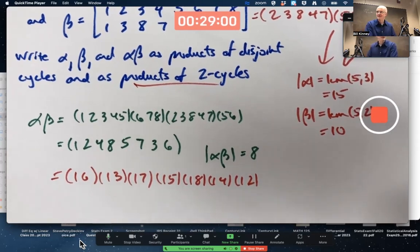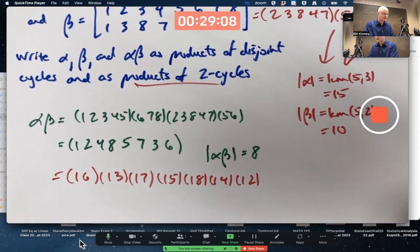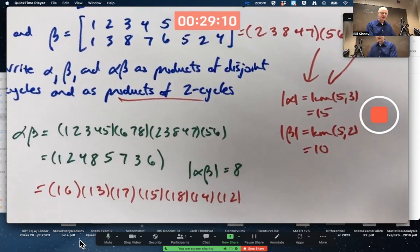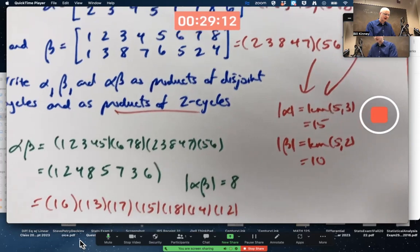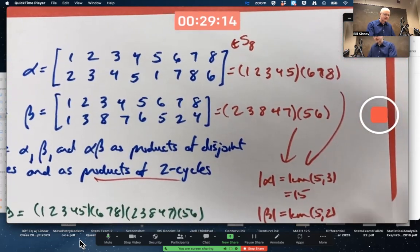They're not disjoint. They all have ones. They do not commute. This is one way of writing this as a product of disjoint two cycles. That's the product alpha beta. How about alpha and beta individually?